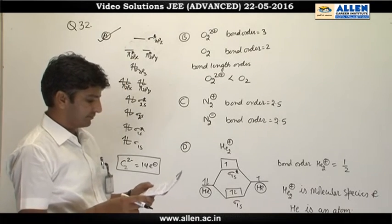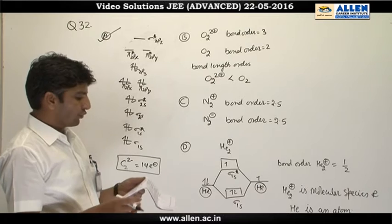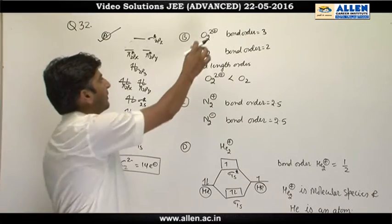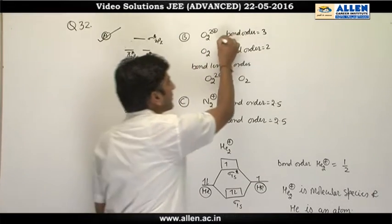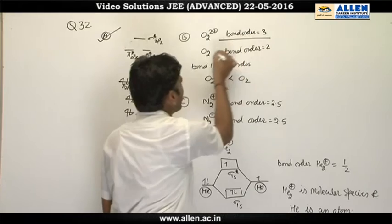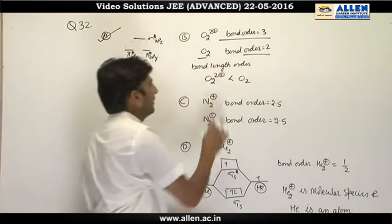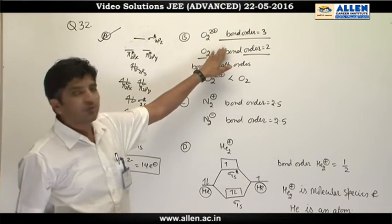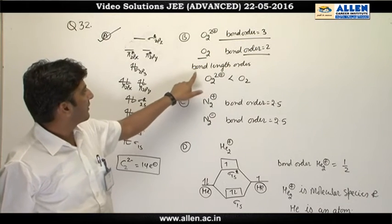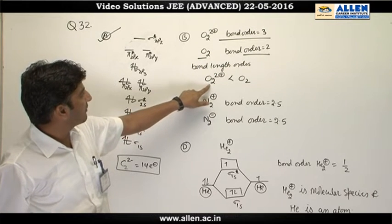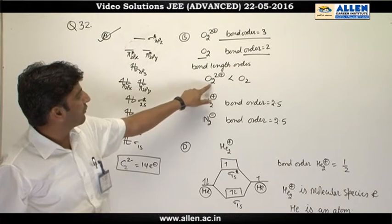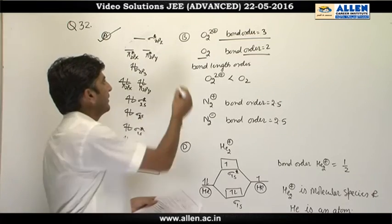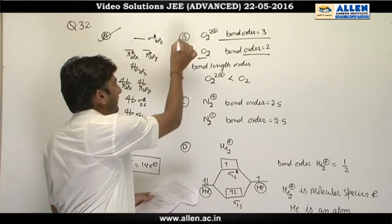Option B: O₂²⁻ is expected to have a longer bond length. O₂²⁻ ka bond order 3 hai, O₂⁻ ka bond order 2 hai. Bond order aur bond length ek doosre ke inversely proportional hote hain. Iska matlab O₂²⁻ ki bond length choti hogi aur O₂⁻ ki bond length badi hogi. This statement is incorrect.